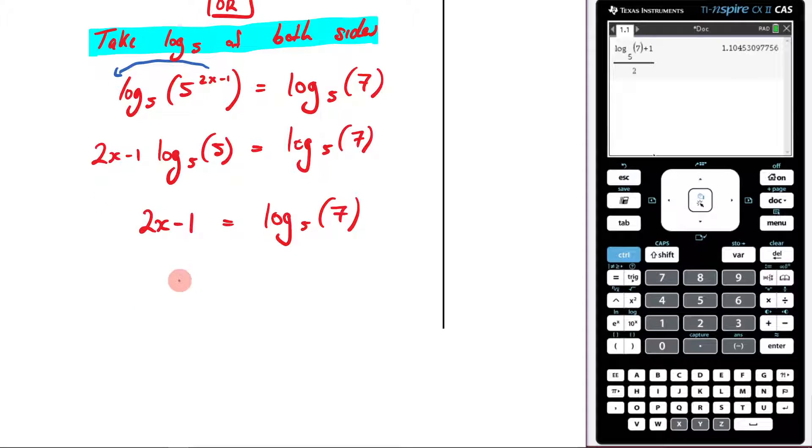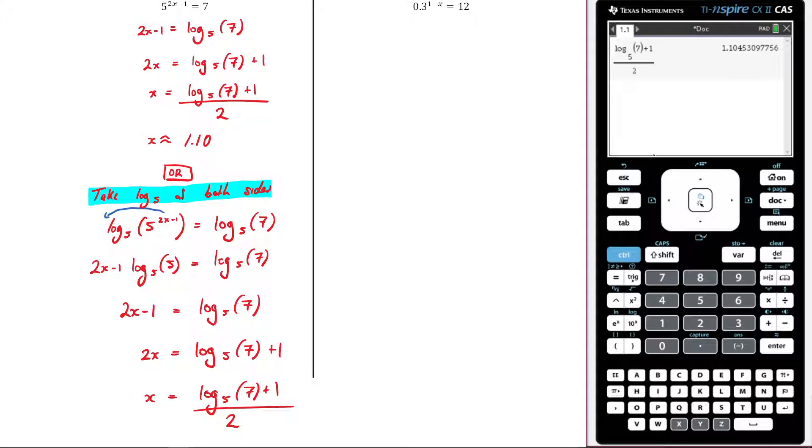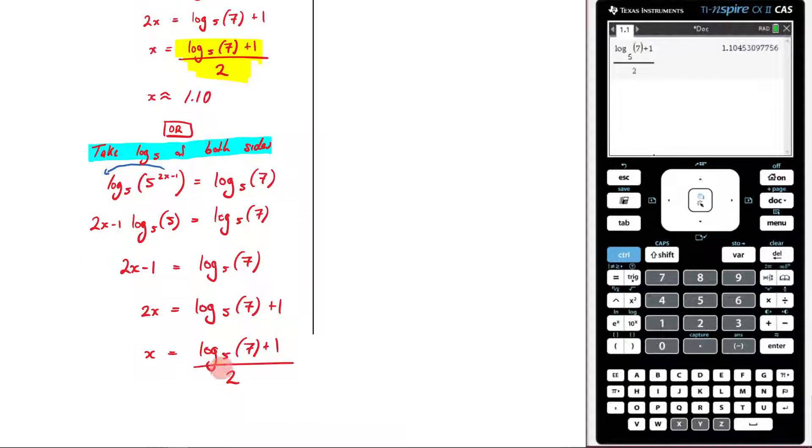And then once I'm here, I do a bit of rearranging. So I'm going to end up with 2x is equal to log to the 5 of 7 plus 1, and then I'll divide all of it by 2. And once I've done that, hopefully you can see that I'm going to end up with the same answer I got up there. This is the same as this.